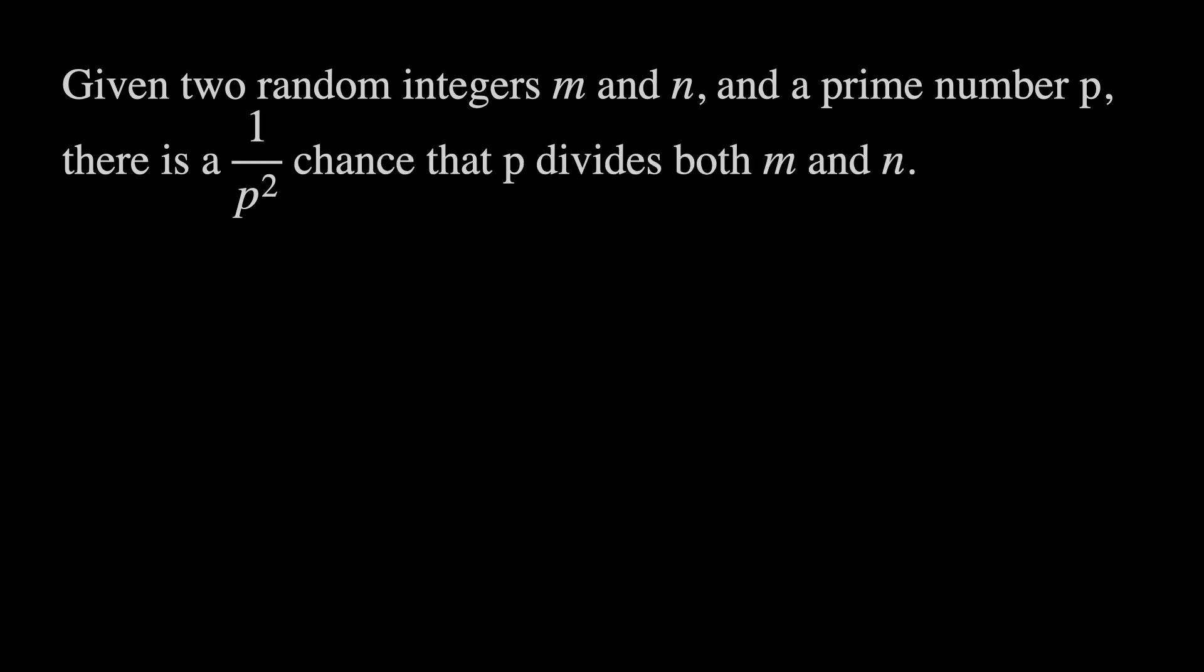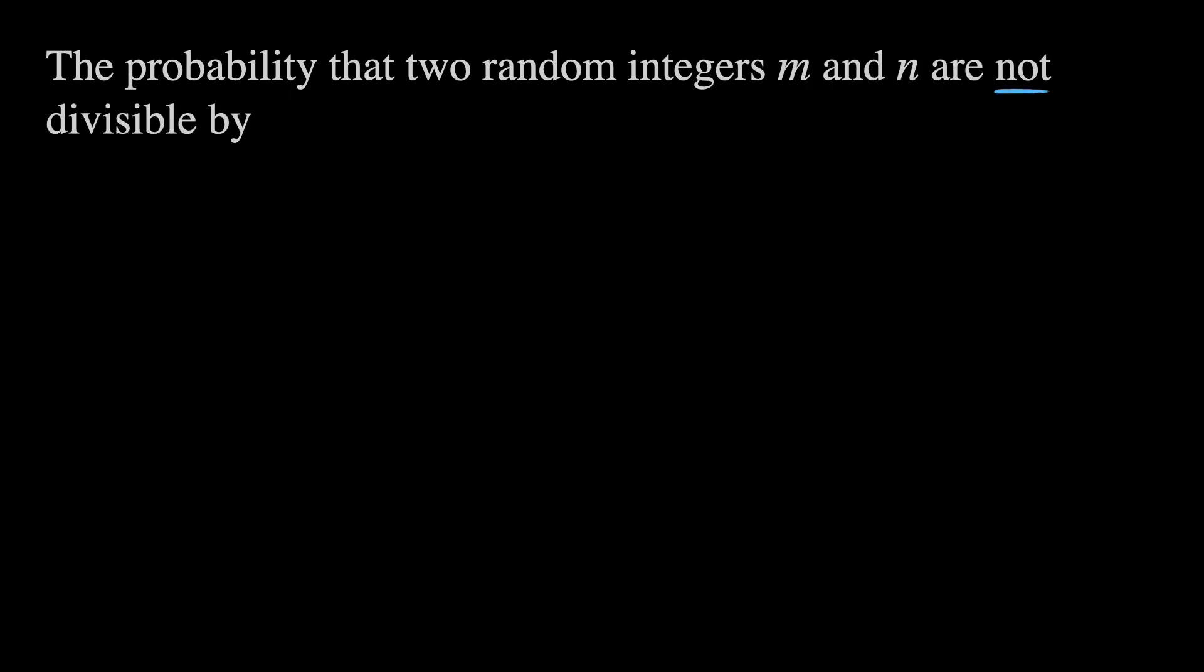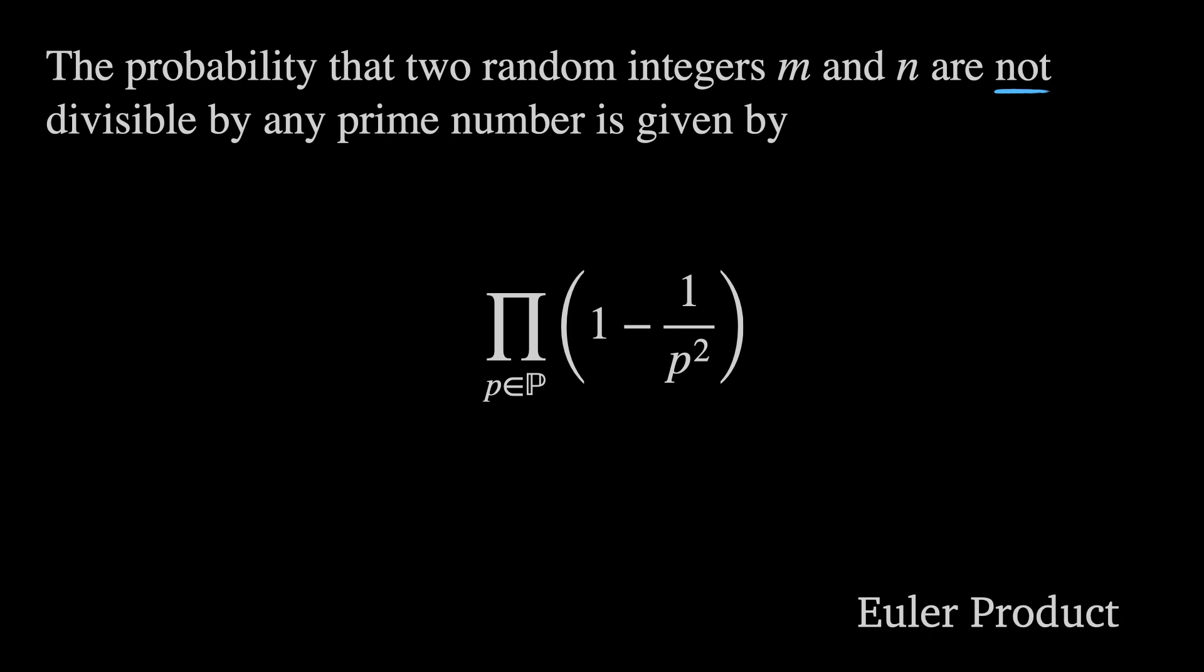Given two random integers, M and N, and a prime number P, there is a 1 over P squared chance that P divides both M and N. This is the product of the 1 over P probability that P divides M, and the 1 over P probability that P divides N. The probability that two integers M and N are not divisible by any prime number, is therefore given by the product over all prime numbers of 1 minus 1 over P squared. This is known as the Euler product.